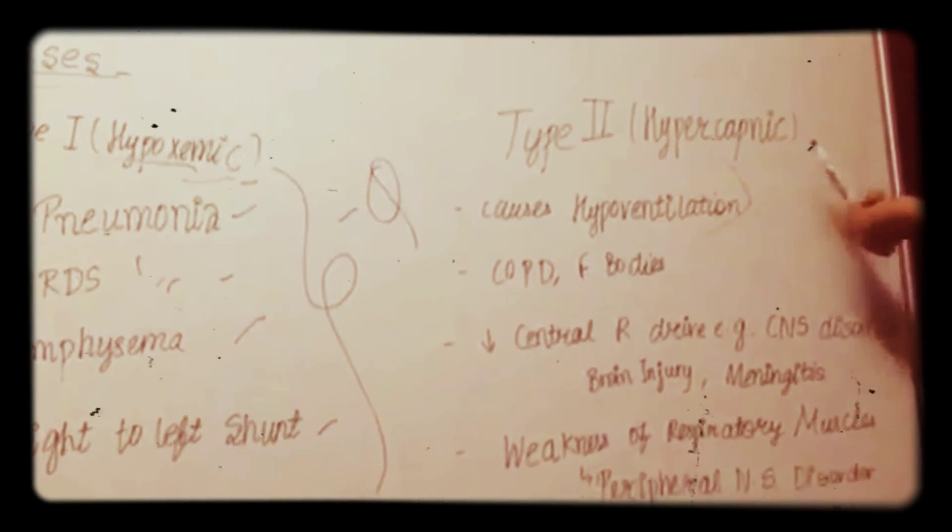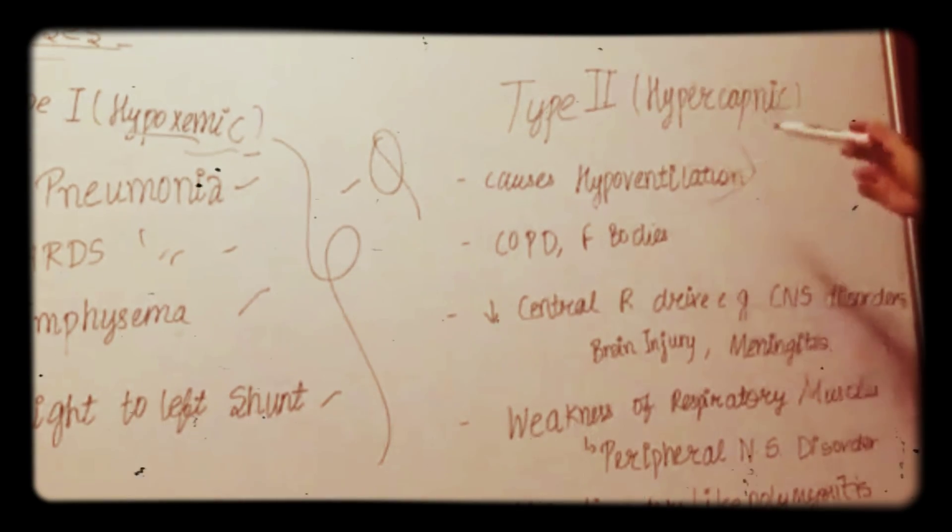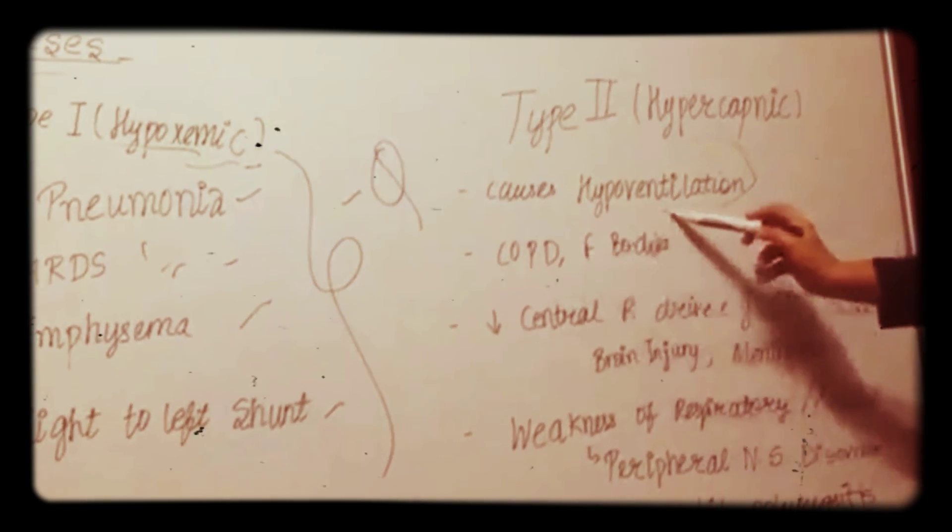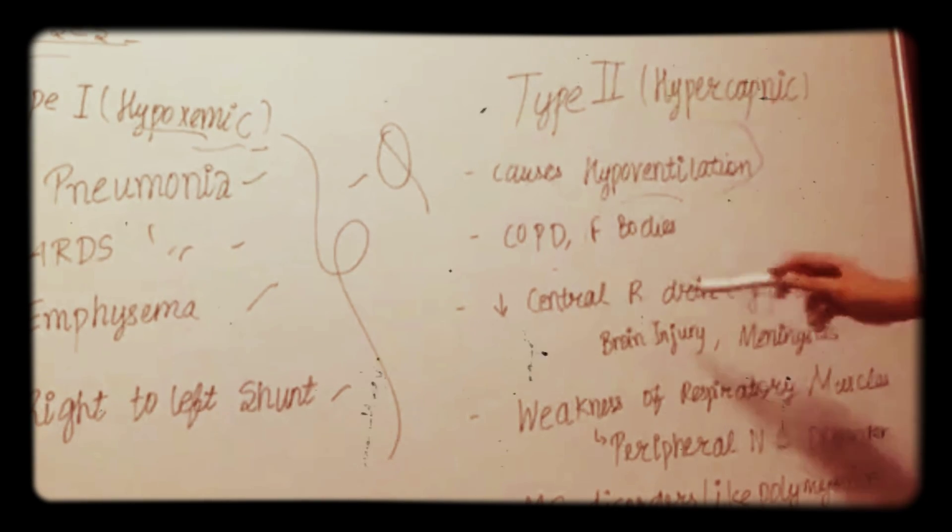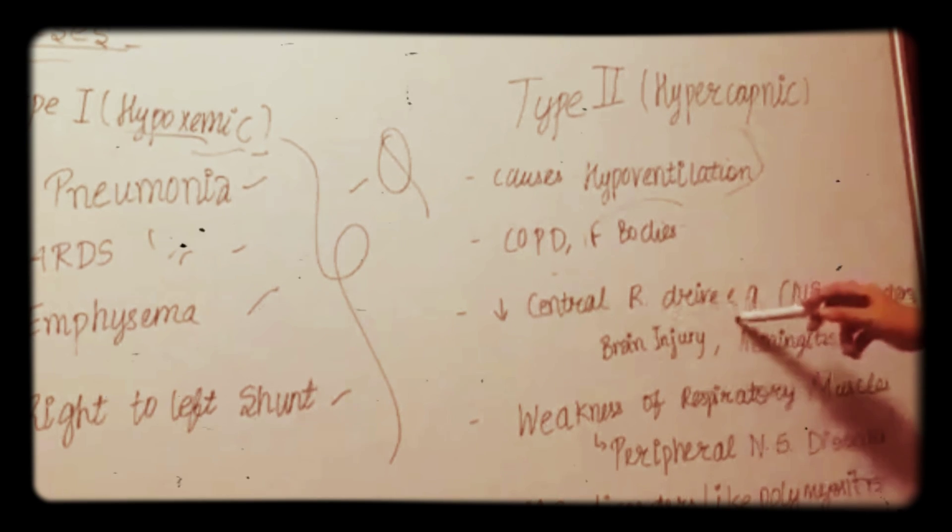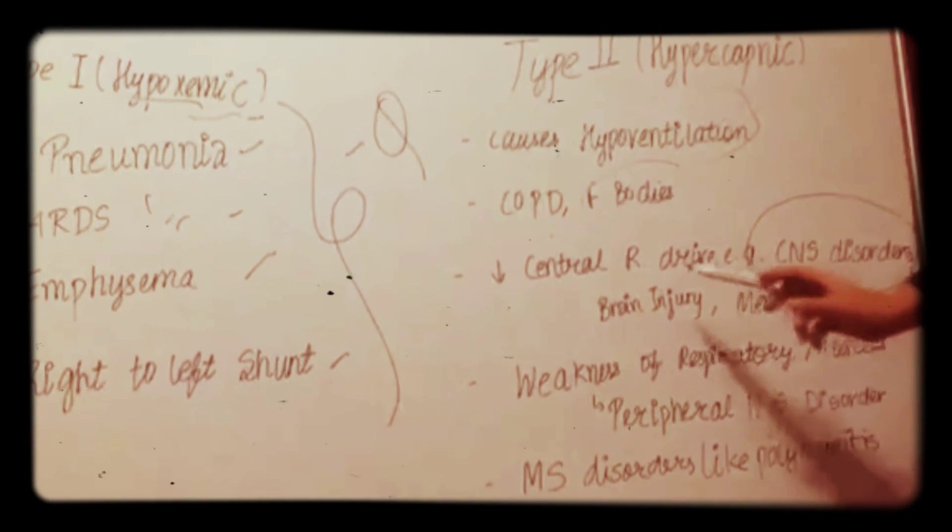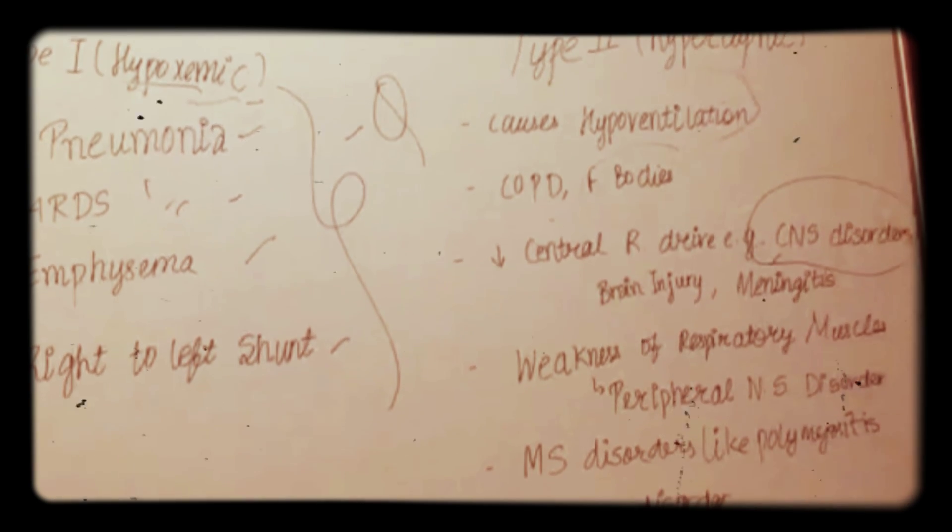In type 2, hypercapnic respiratory failure, it occurs in conditions which cause hypoventilation like COPD and foreign bodies. It decreases central respiratory drive, example in central nervous system disorders, in brain injury and in meningitis.